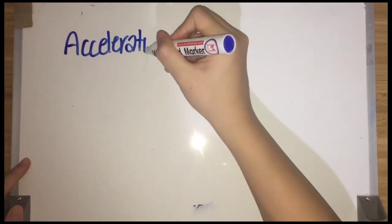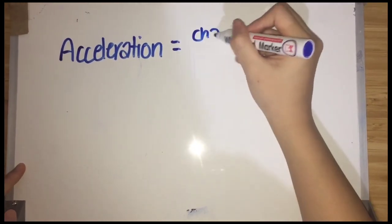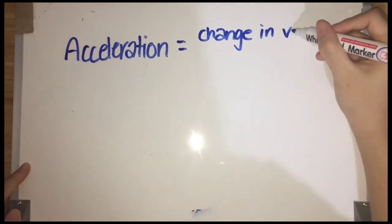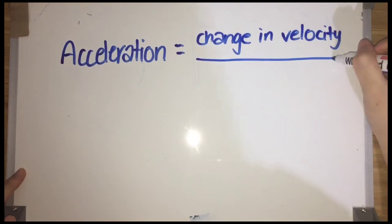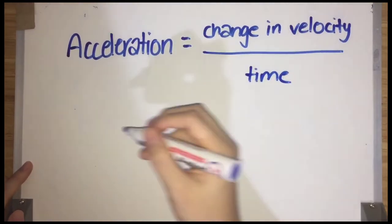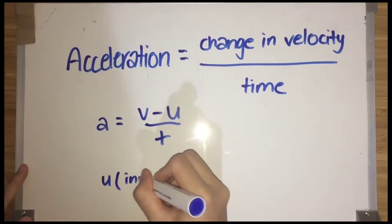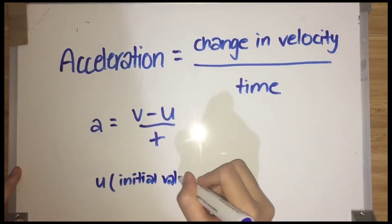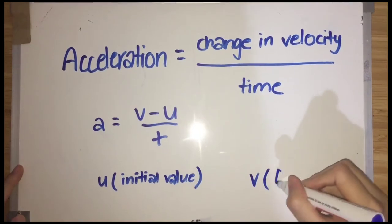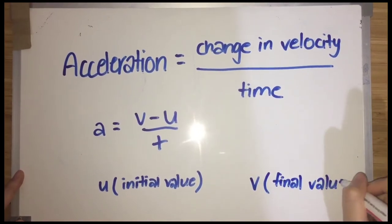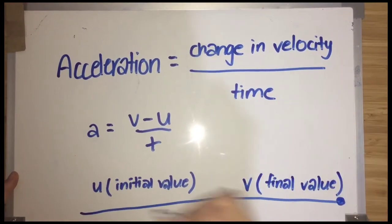Now let's see how acceleration can be calculated. The formula of acceleration can be written as change in velocity over time taken. The acceleration can be written as a equals v minus u over t, as the velocity of an object changes from the initial value u to the final value v in time t.